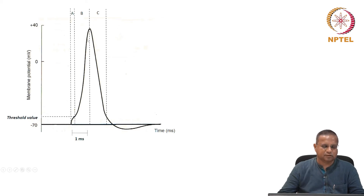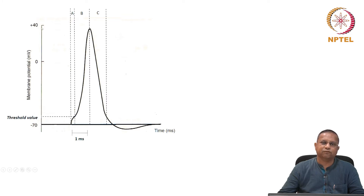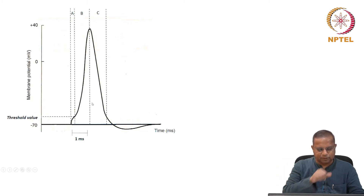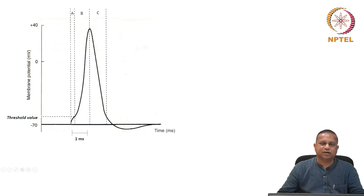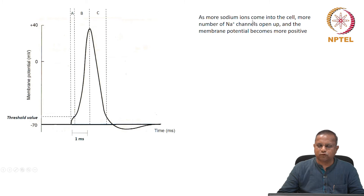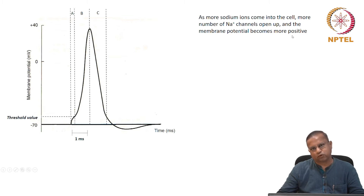This is typically what happens: on the time axis in milliseconds and the membrane potential axis in millivolts, we start at minus 70 millivolts, with 0 and plus 40 marked. Initially at minus 70, upon stimulation the sodium ions start coming into the cell, and the membrane potential moves away from minus 70 — the membrane is getting depolarized. As more sodium ions come in, more sodium channels open up and the membrane potential becomes more positive.